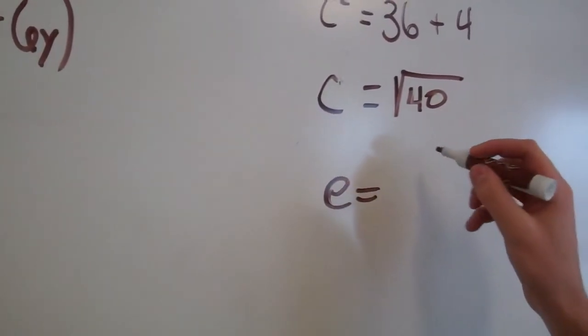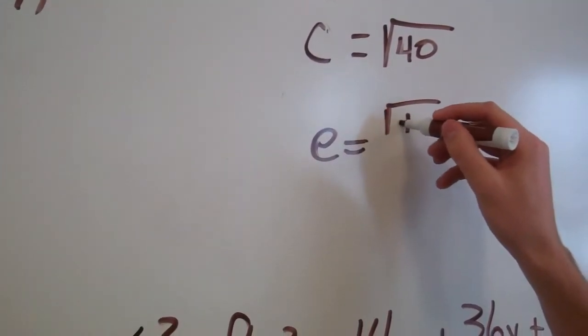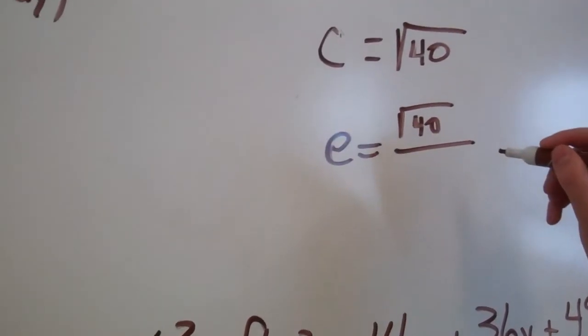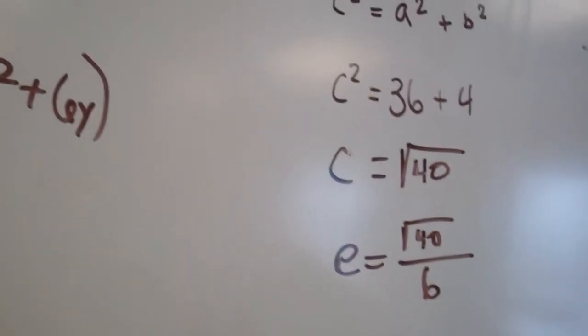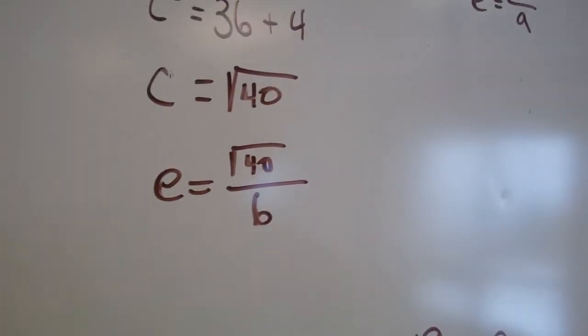So, c squared equals the square root of 40 over, it would be that. And then just calculate that, and you should be good.